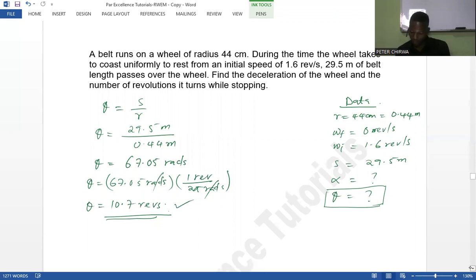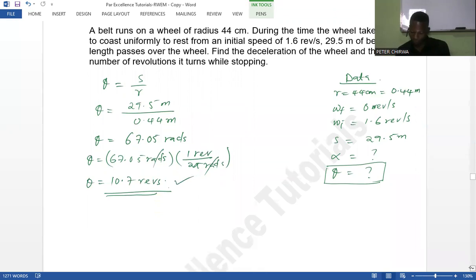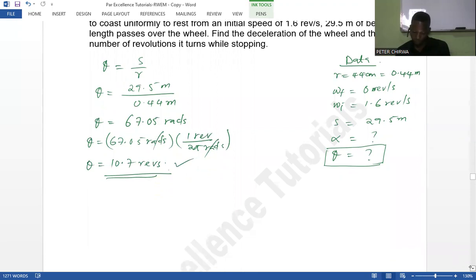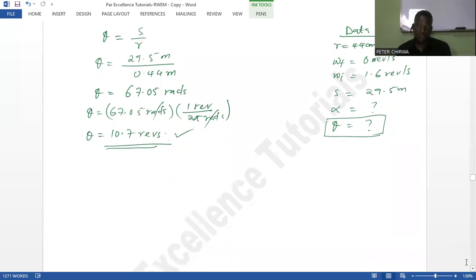All right, so how do we get angular deceleration? We have the equations of motion, rotational motion of course. We're going to use this one: ωf² - ωi² = 2αθ. That is the equation we're going to use.